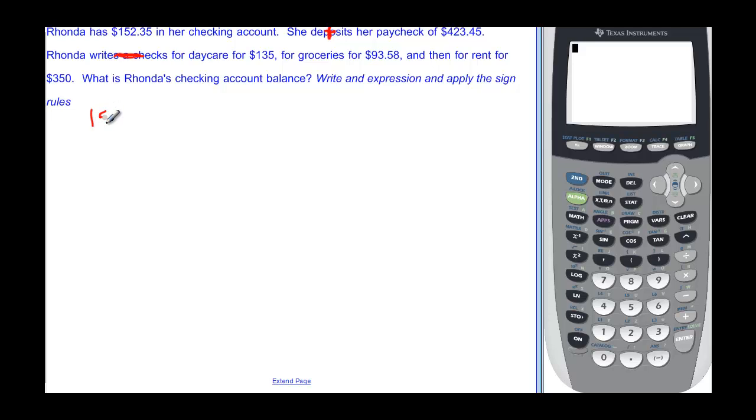We start with $152.35. And then she deposits $423.45. So she adds $423.45. And then she's going to subtract $135, and she's also going to subtract $93.58. And finally she's going to also subtract $350. Those are all her payments.